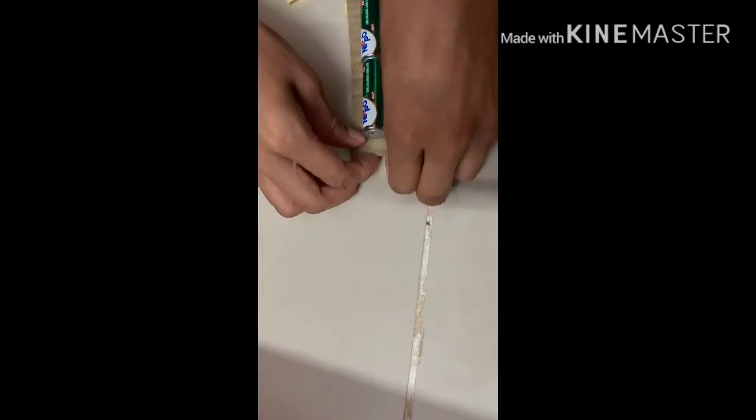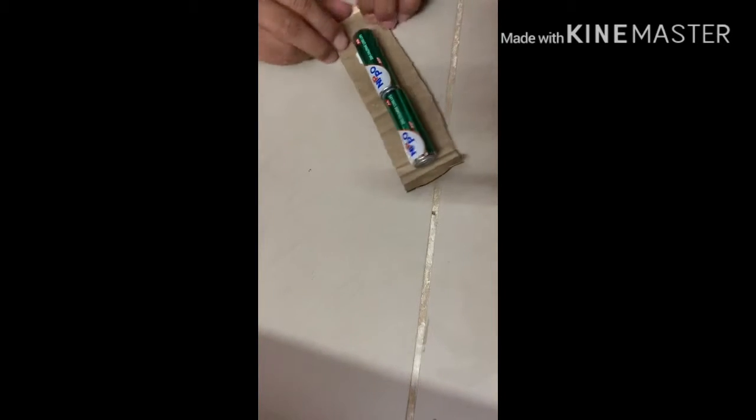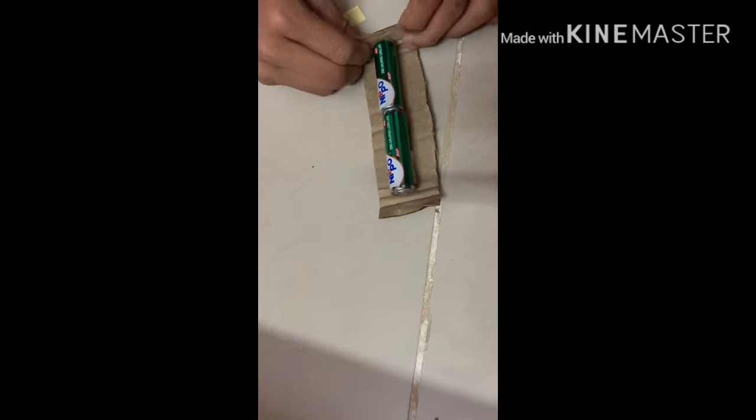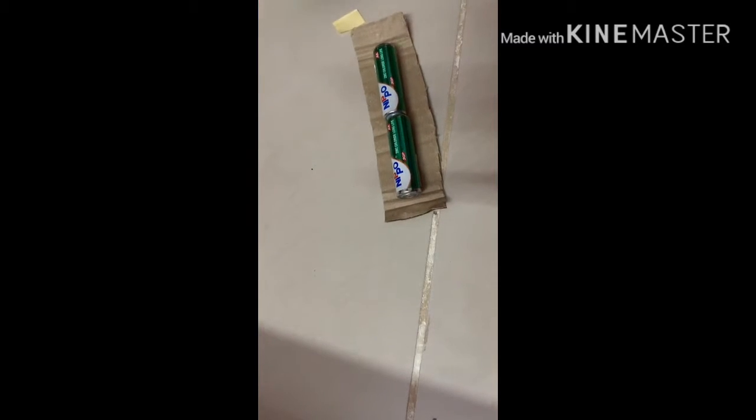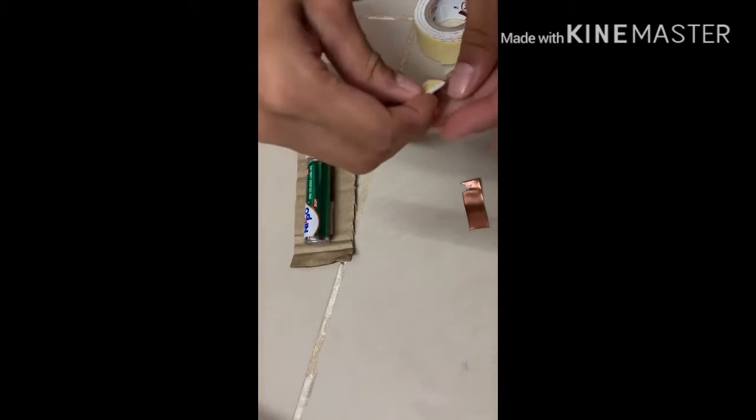So, now fold up these parts. We have now folded it in such a way that we can see where to keep the copper plates. So, now take the two copper plates. Take the double tape. Cut a few pieces of it. Attach it to the copper plate.